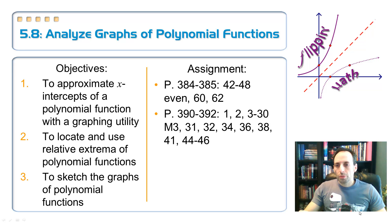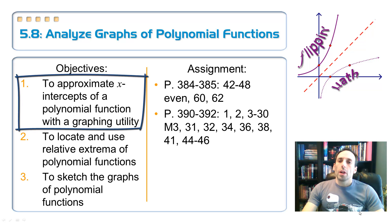So we've got three objectives here. The first one, we're going to approximate the x-intercepts, the zeros of a polynomial function using a graphing utility, a graphing calculator. So far we've done it algebraically. Now, here's a complete cheat: just plug it into the calculator and let's have the calculator find out where it touches the x-axis.